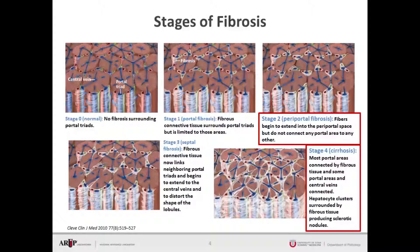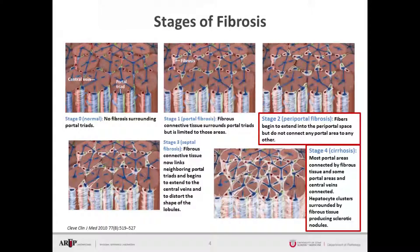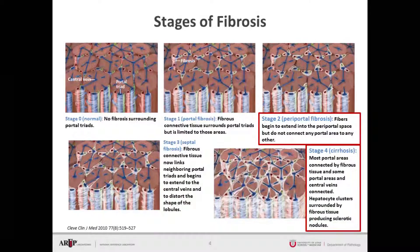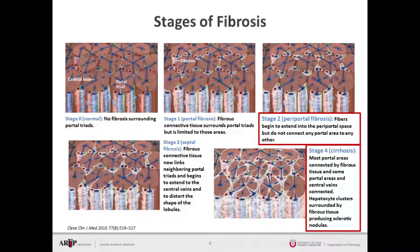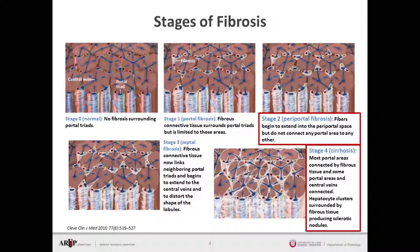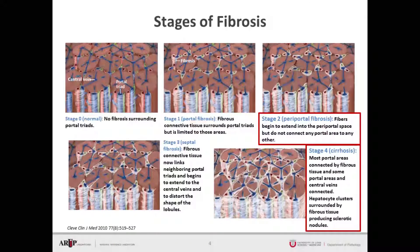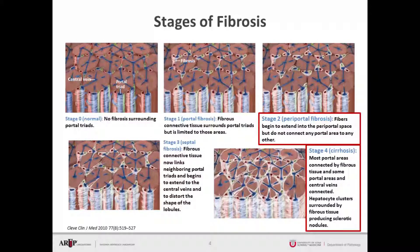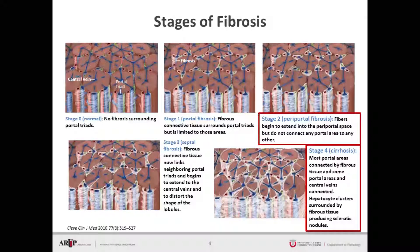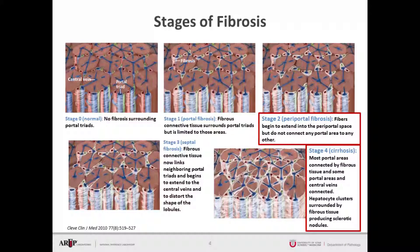In stage two, or periportal fibrosis, fibers begin to extend into the periportal space, but do not connect any portal area to any others. In stage three, fibrosis connective tissue now links neighboring portal triads and begins to extend to central veins, distorting the shape of the lobules.